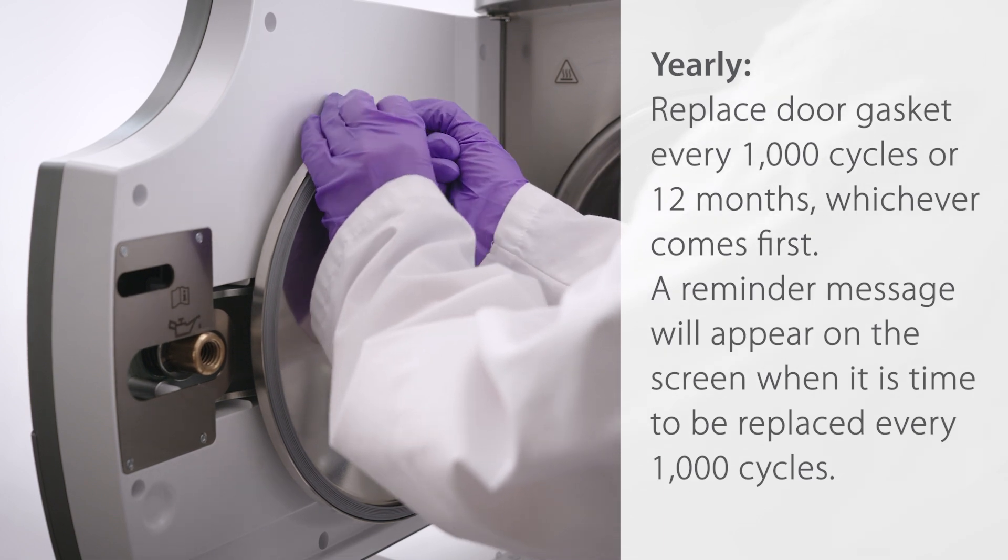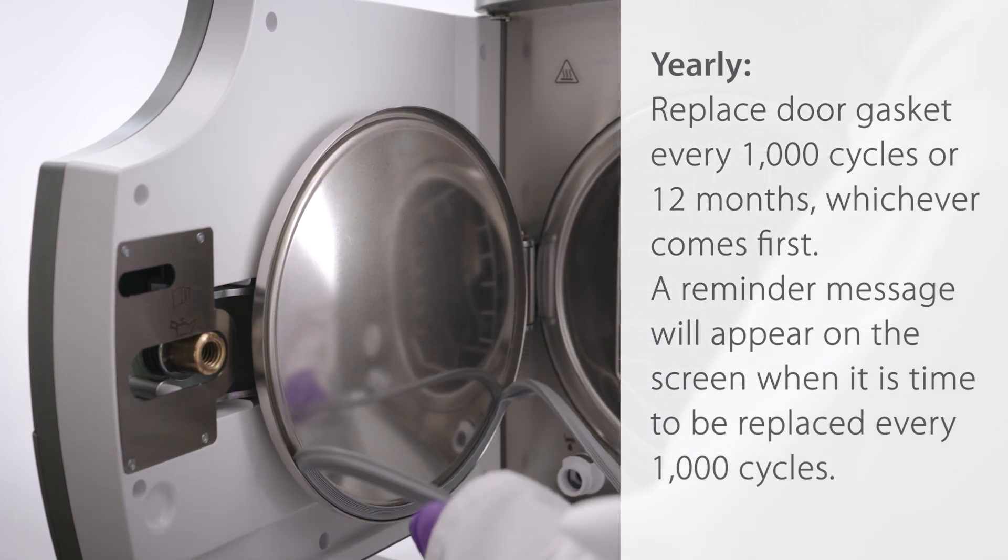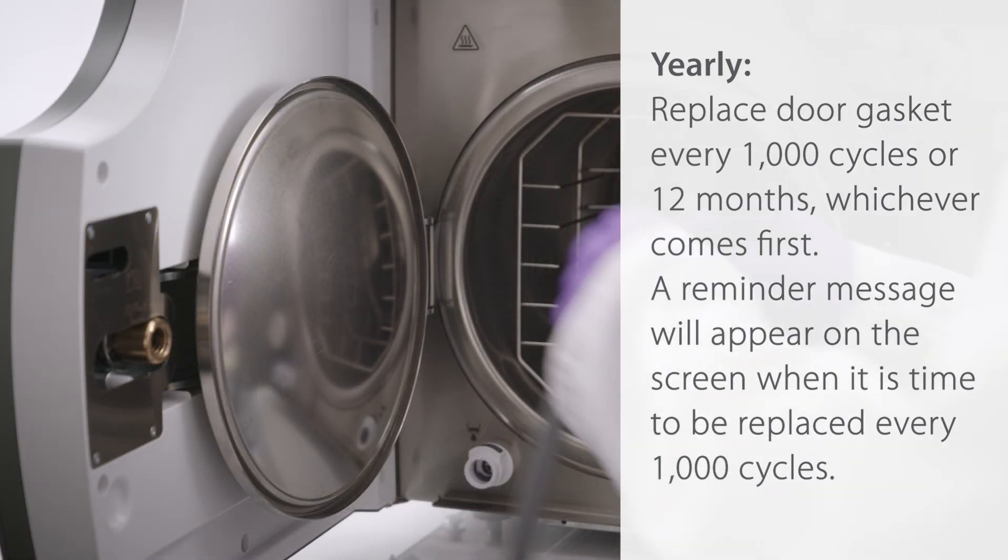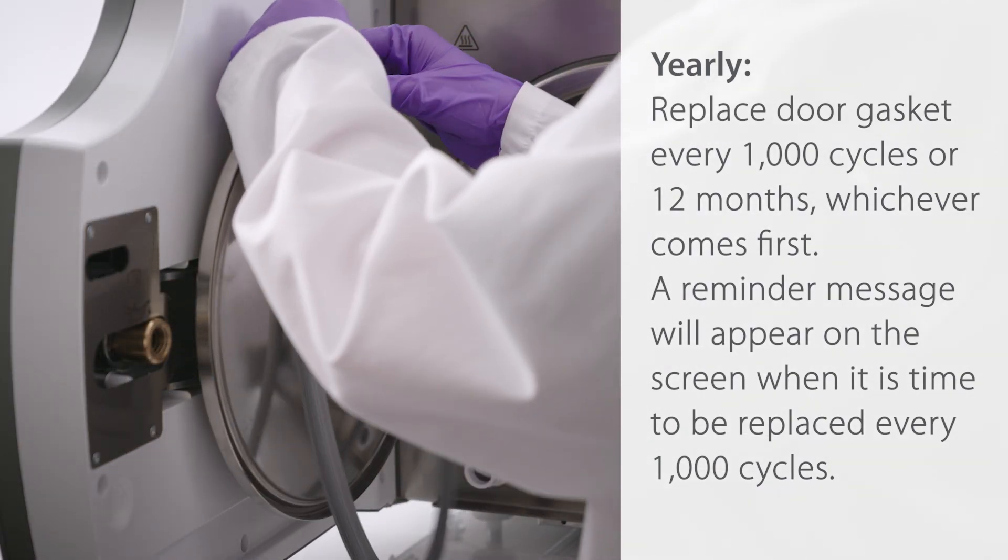Yearly, replace the door gasket every 1000 cycles or 12 months, whichever comes first. A reminder message will appear on the screen when it is time to be replaced every 1000 cycles.